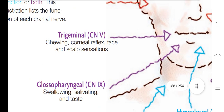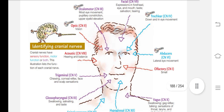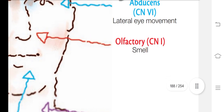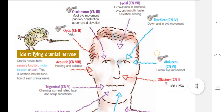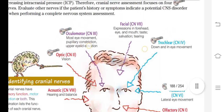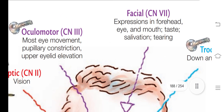Cranial nerve 5 is the trigeminal nerve, responsible for chewing, corneal reflex, and face and scalp sensations. Cranial nerve 6 is abducent, which controls lateral eye movement affecting the lateral rectus muscles. Cranial nerve 7 is the facial nerve, responsible for facial expressions around the forehead, taste, salivation, and tearing.